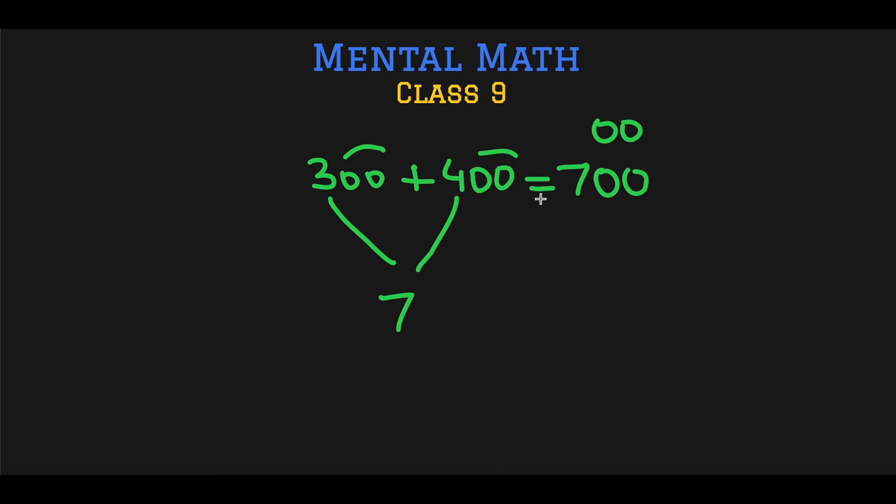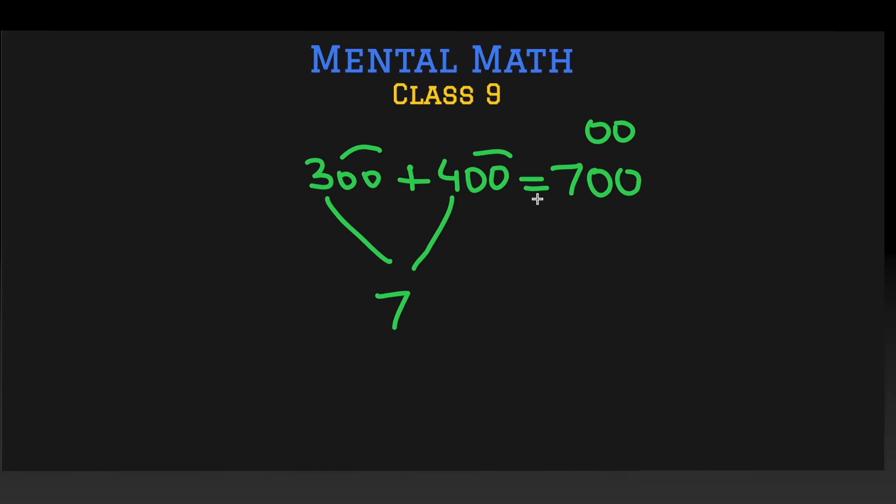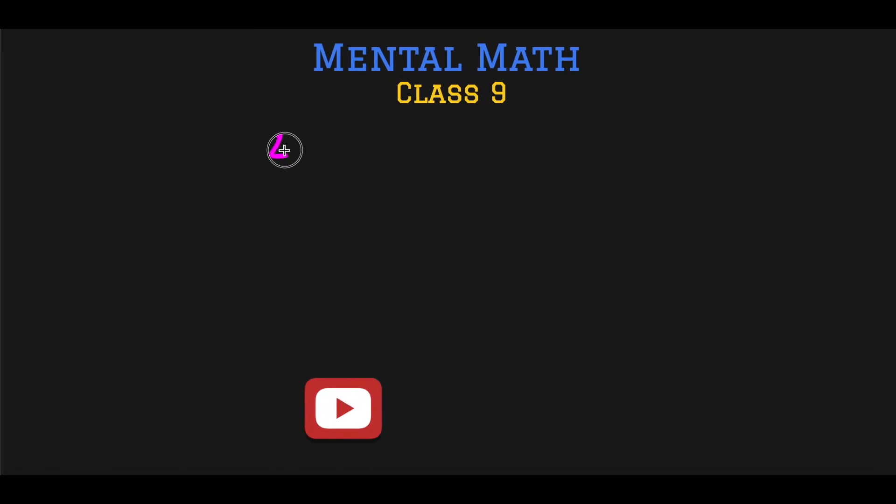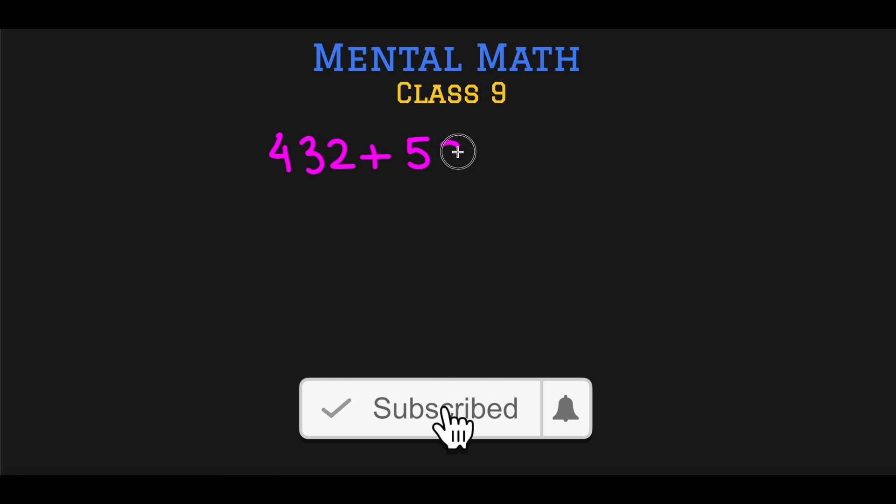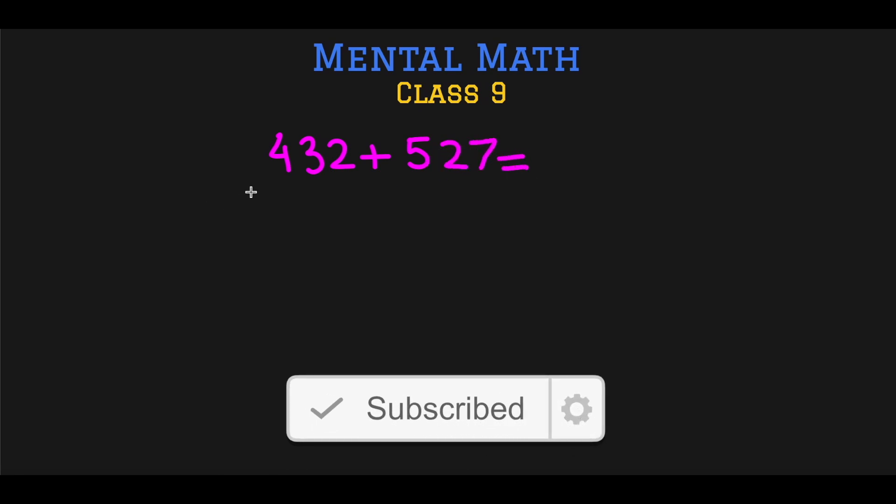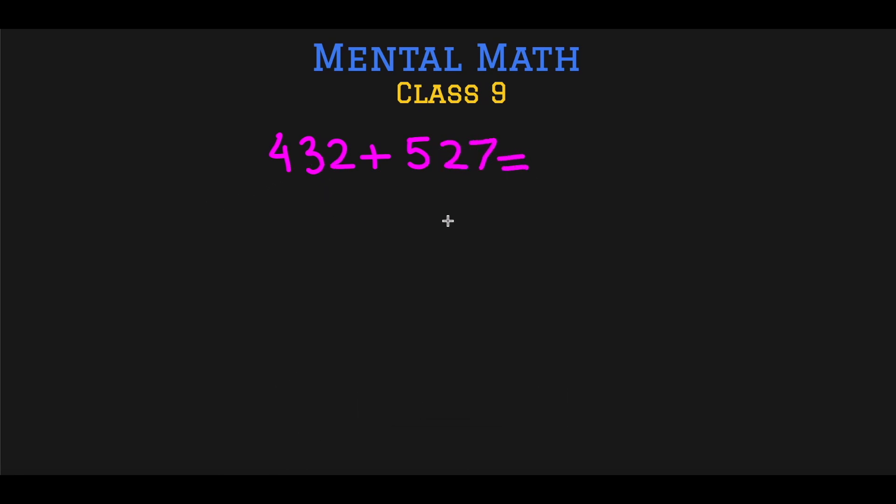Very simple, very easy. You just need to know your single-digit addition to handle these kind of questions. Now let's go to the more complicated questions when we are adding three-digit numbers. So we have a question: 432 plus 527. We just have to split both the numbers into their hundreds, tens, and ones, and then add them separately. So 432 has 400s and 527 has 500s.